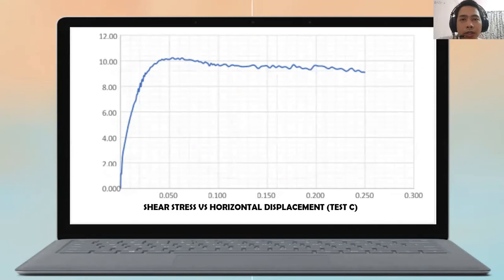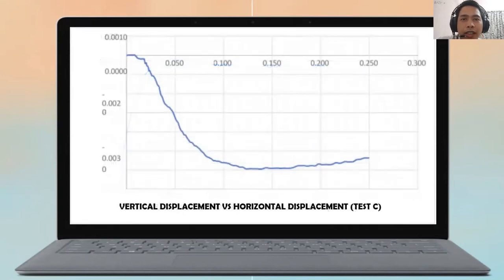Next one is shear strength versus horizontal displacement for test C. And from the graph you can see that the sand is quite dense. And then this is the last graph which is a vertical displacement versus horizontal displacement for test C. And from the graph you can see that the sand is quite loose.